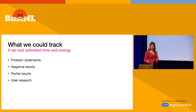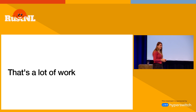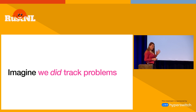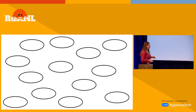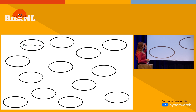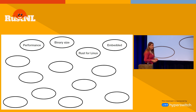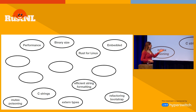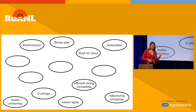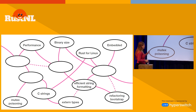We're not very good at tracking any of this, and that's a shame. Imagine if we did track problems — imagine we had some sort of map where each blob represents a problem. It could be high-level problems like performance and binary size, or specific use cases we care a lot about like Rust for Linux or embedded, and we could track all kinds of low-level, more specific problems like mutex poisoning or efficient string formatting. For each of these problems, we could keep track of negative results, partial results, ideas, and most importantly, how they relate to each other — which ones depend on each other and any other connections between these problems.